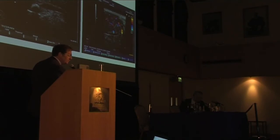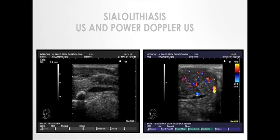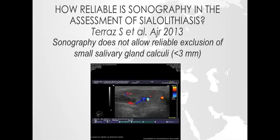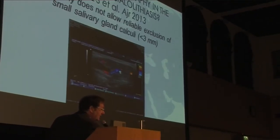Making diagnosis with ultrasonography is quite simple. You can see the stone, the dilation of the duct proximal to the stone, and you can also see with the use of power Doppler the vascularization — the increase of vascularization during acute obstruction. But we know that sonography does not allow reliable exclusion of small salivary gland calculi, especially those less than three millimeters.